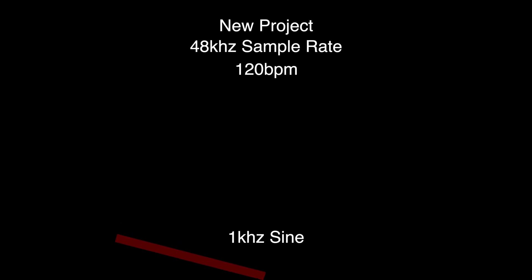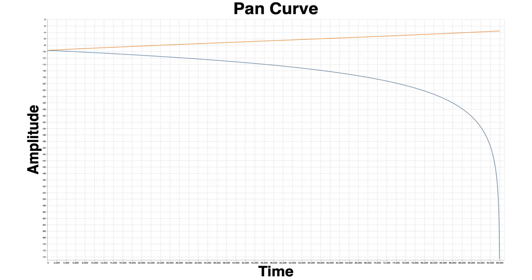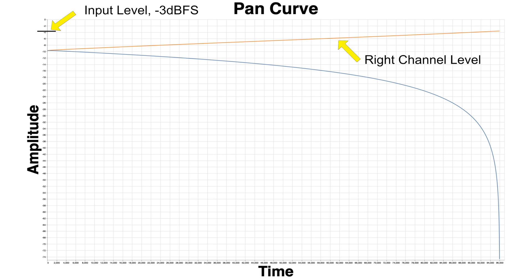In each DAW I created a new project at a 48 kilohertz sample rate, 120 BPM, then created a center-to-left automation over one bar of a 1 kilohertz sine wave at negative 3 decibels full scale. In the sample data, on the left we have the input level — our signal is negative 3 dBFS, so anything lower or greater than this is what the DAW is doing to the signal. Then we have the right channel and the left channel, and at 96,000 samples is where the pan should be terminated. That's all you really need to know to read these graphs.